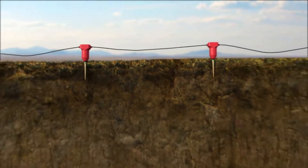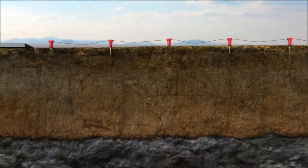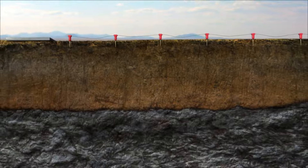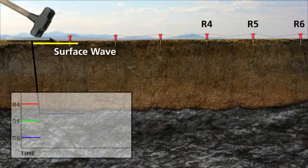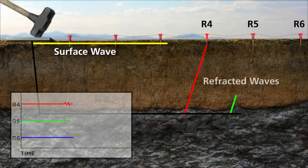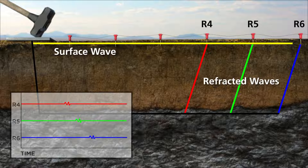Seismic geophysical methods use propagation of energy to gather data about the subsurface. An impact or vibration source creates energy in the form of waves. Geophones record wave arrival. Seismic refraction, a surface method, allows for mapping of subsurface changes such as depth to bedrock and relative soil density.